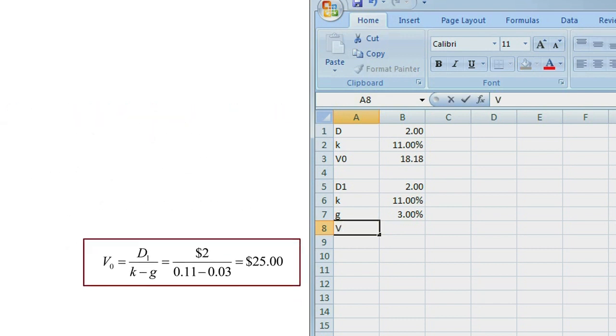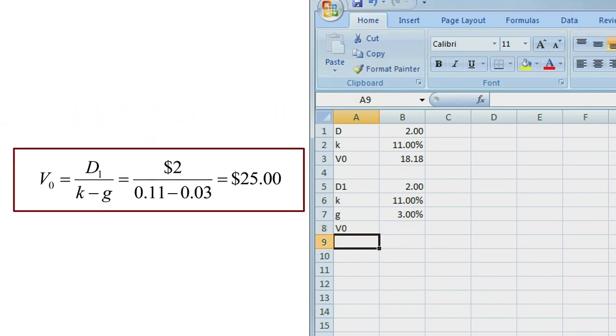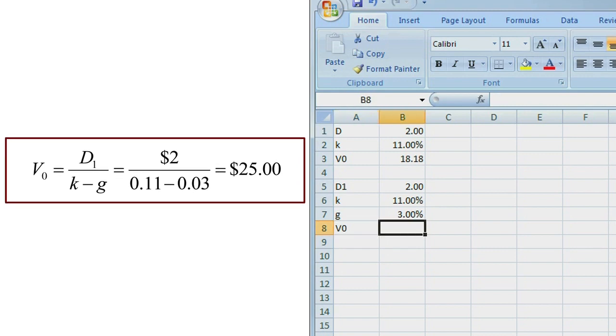And we're trying to find the value of the stock at time 0. So again, it's a simple formula here that we can put into Excel. It's the dividend to be received a year from now, divided by K minus G. Now note that I'm putting the parentheses in here for the discount rate minus the growth rate. And you see here that our value comes out to $25 per share.